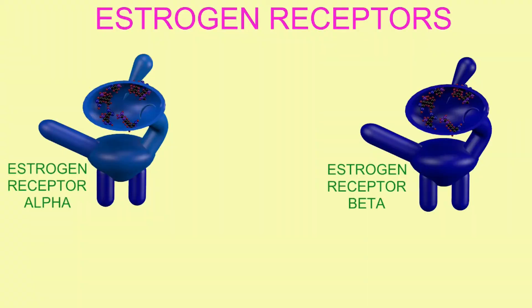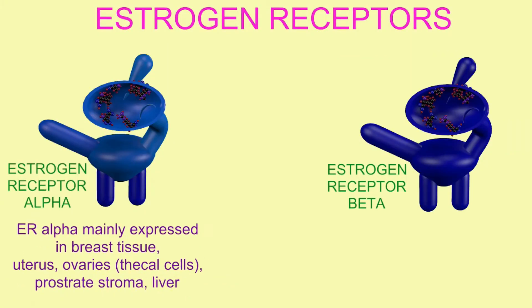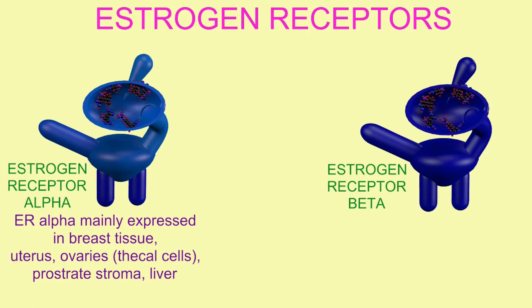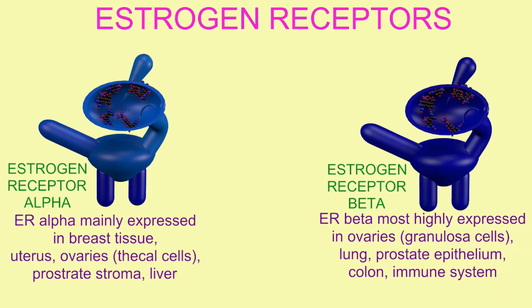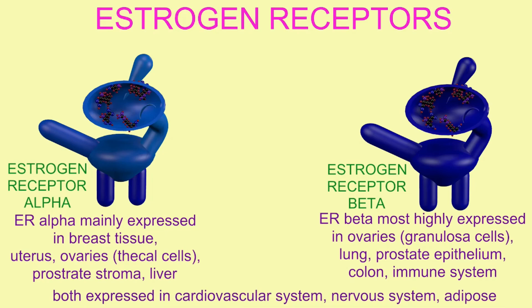There are other examples of this: breast tissue, the uterus, and the liver would mainly express the alpha receptor, while the lung, colon, and immune system would primarily express the beta receptor. Both receptors are typically expressed at comparable levels in the cardiovascular system, the nervous system — including parts of the brain — and adipose tissue.